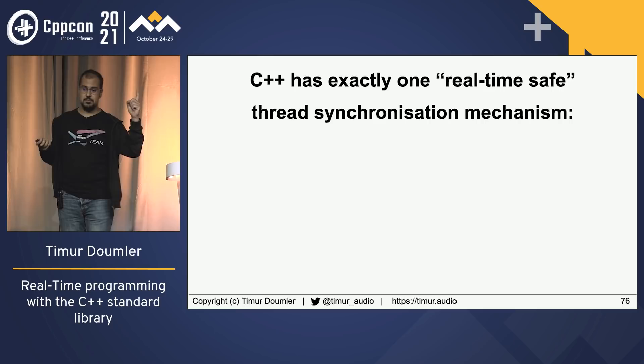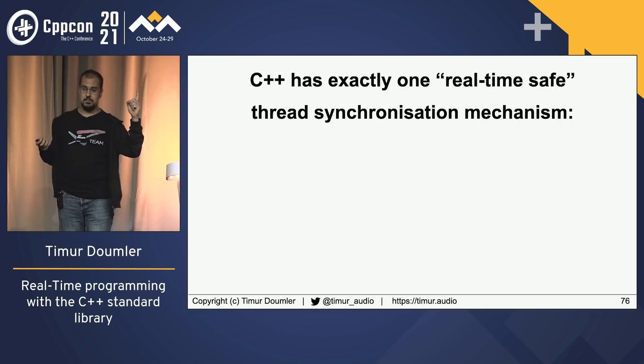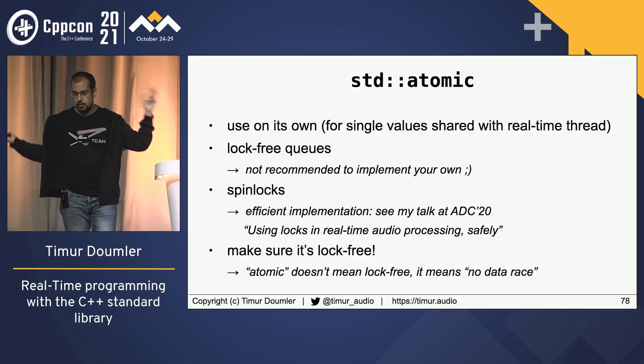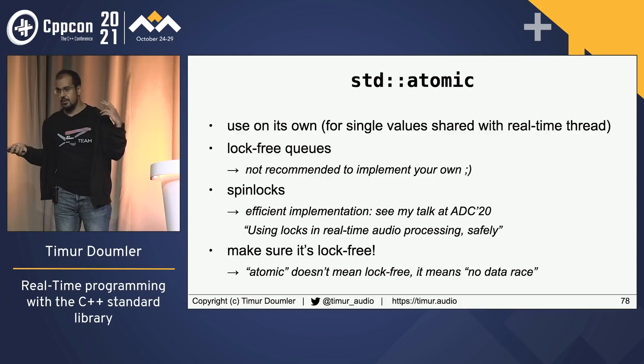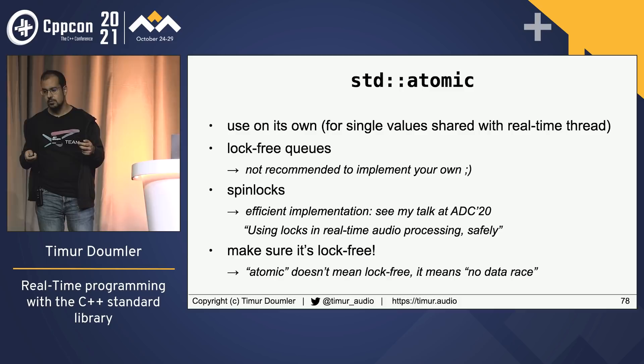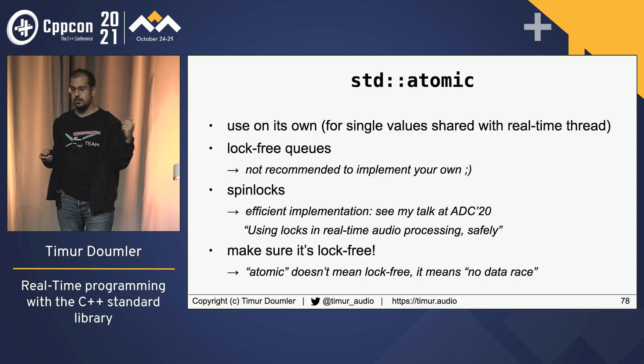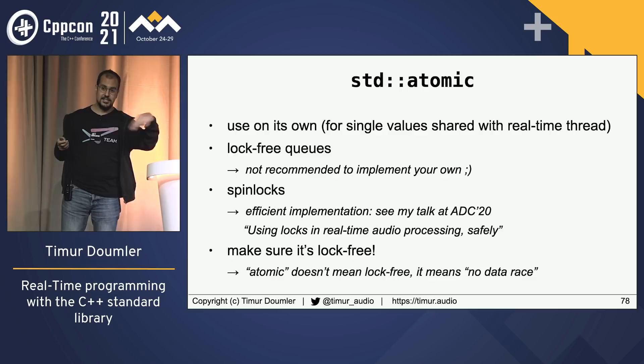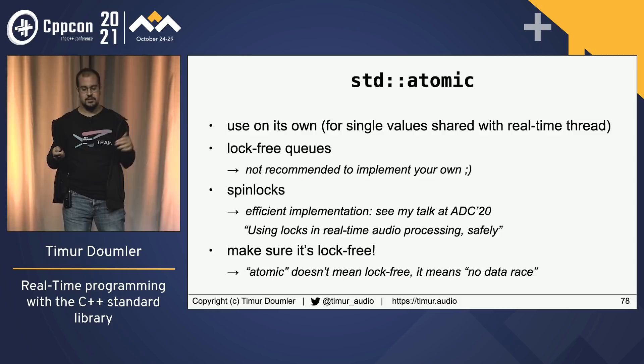C++ has exactly one synchronization primitive that is real-time safe: std::atomic. It's the only mechanism to synchronize threads in a real-time safe way. You can use it on its own to share single values between threads, or as a primitive to build lock-free data structures — like lock-free queues to get data in and out of the real-time thread — or to build a spin lock.